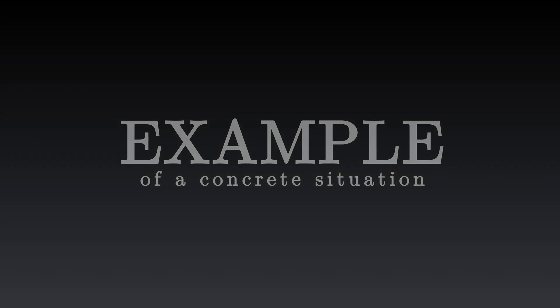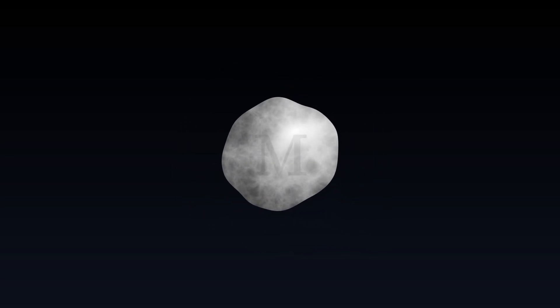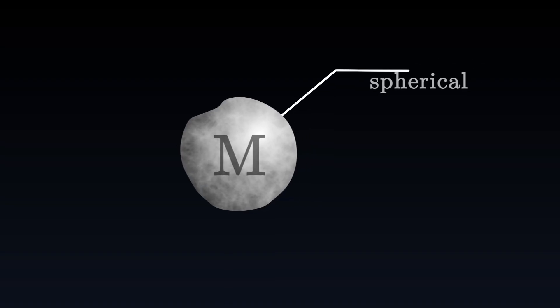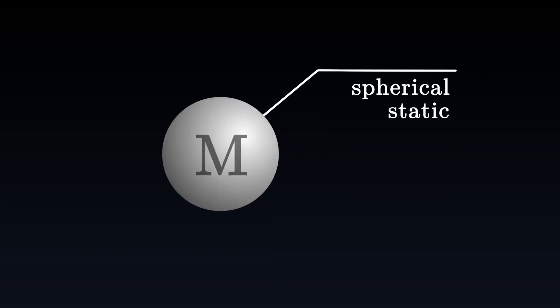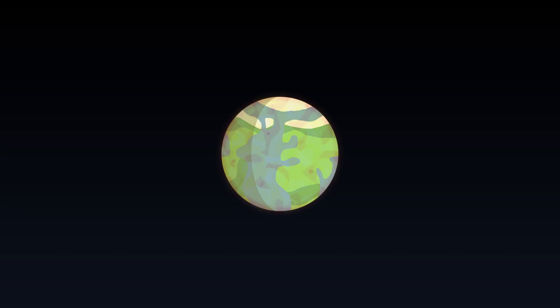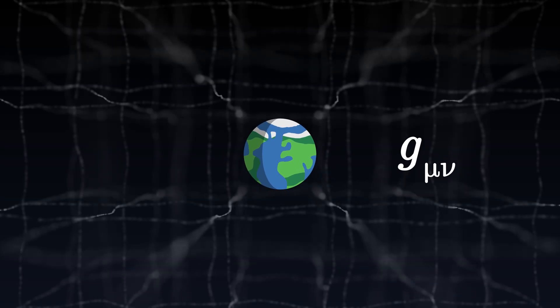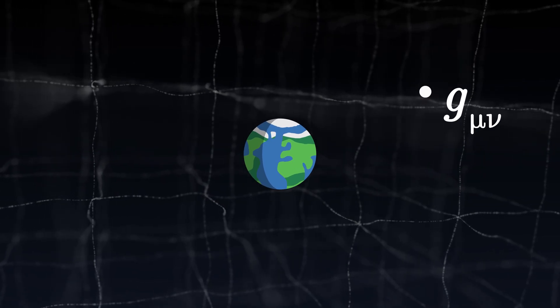Einstein's equation is very complex, but it still accepts a number of exact solutions. The simplest and most practical is the following. Let us imagine an empty universe in which we place a massive body of mass M. We suppose that it is spherical, static — that is to say it does not evolve over time — and that it has no electric or magnetic properties. This body may represent a star like the Sun or a planet like the Earth. Our goal is to determine the metric tensor, and therefore the geometry of space-time at a point outside the object.